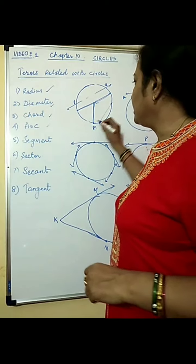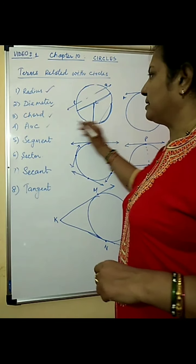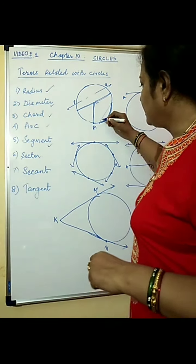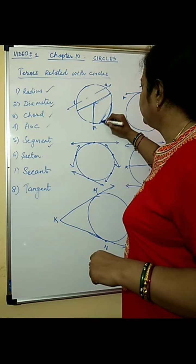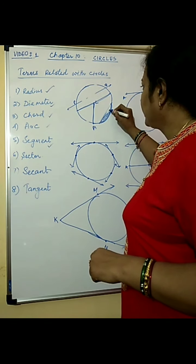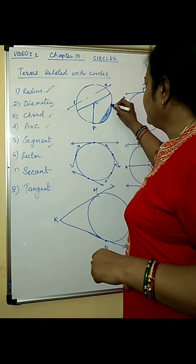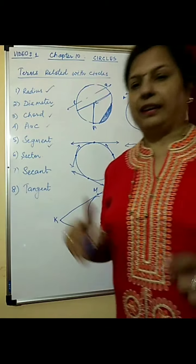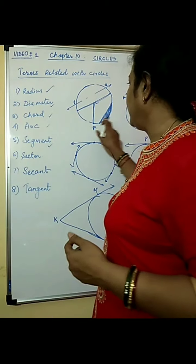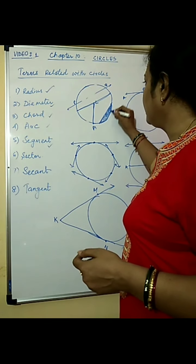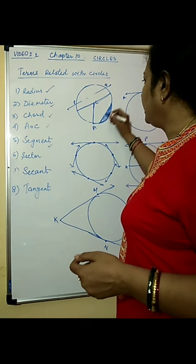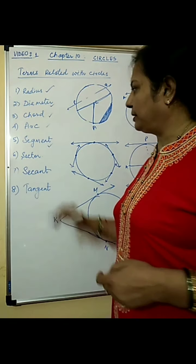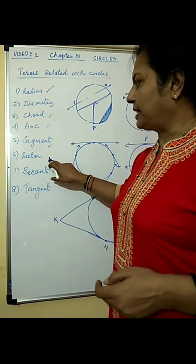Arc of a circle is part of the circumference. Segment is the area between an arc and a chord — any chord.